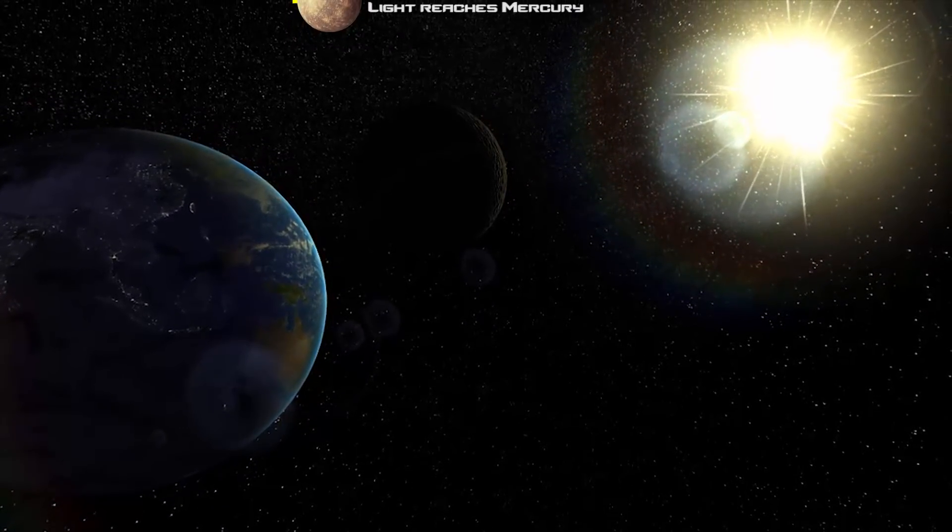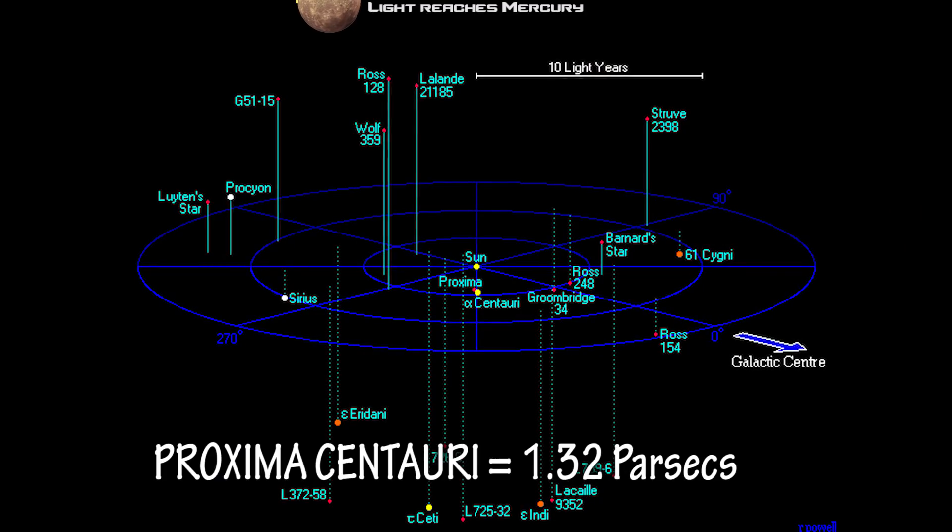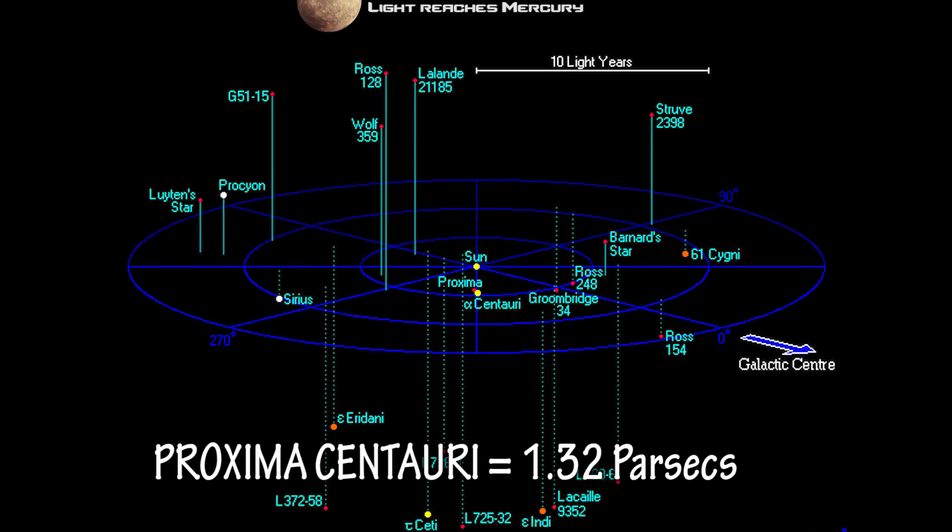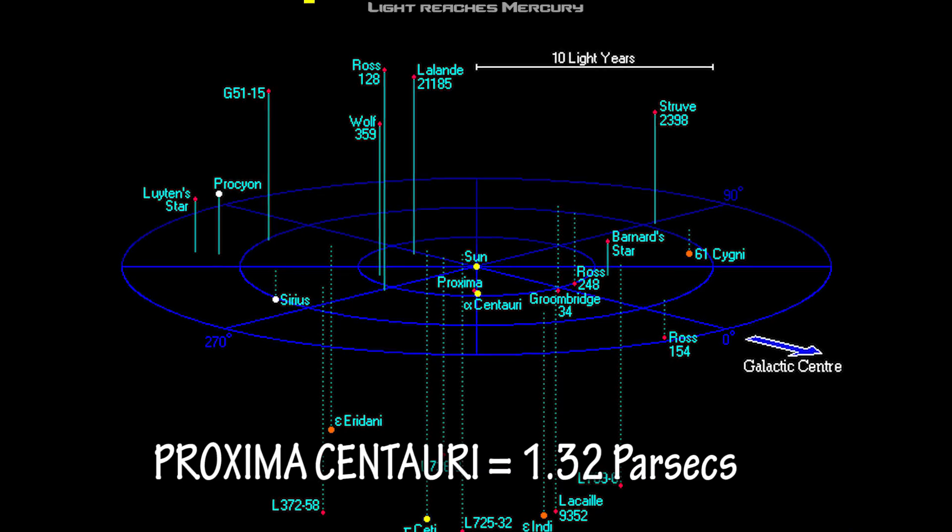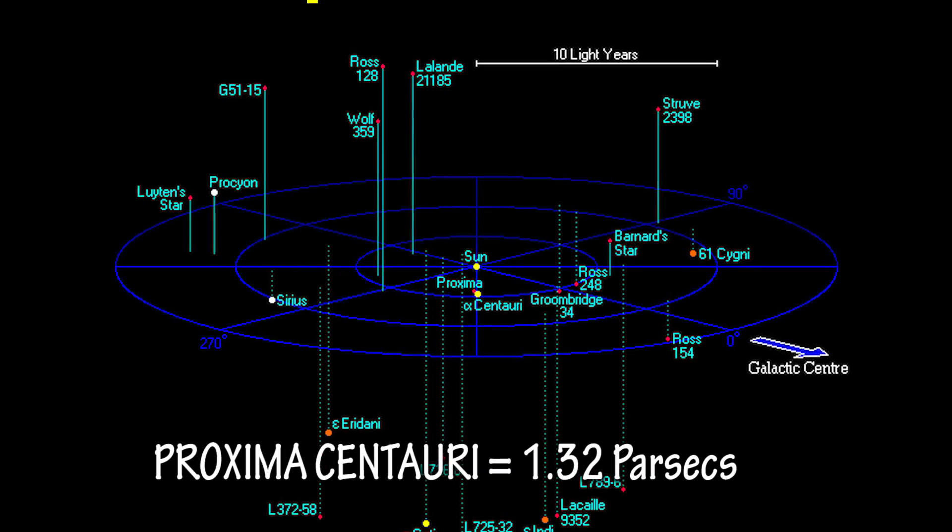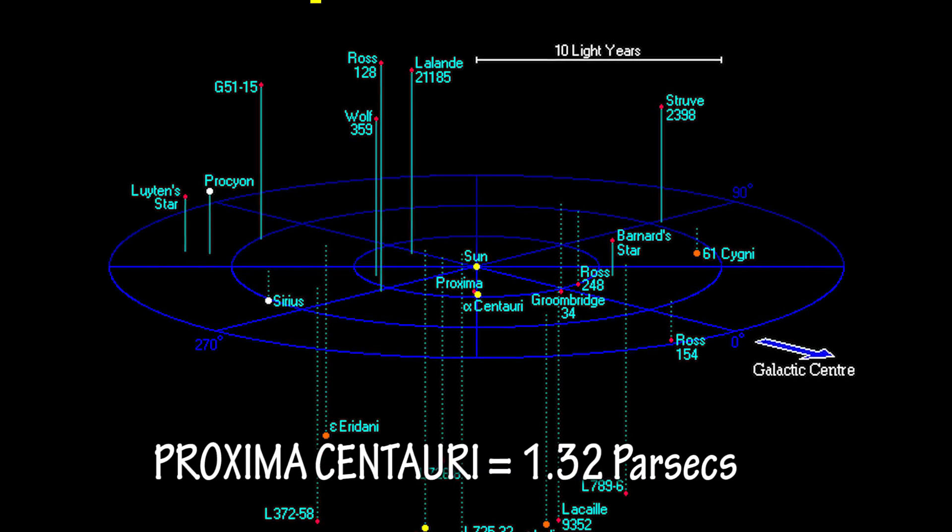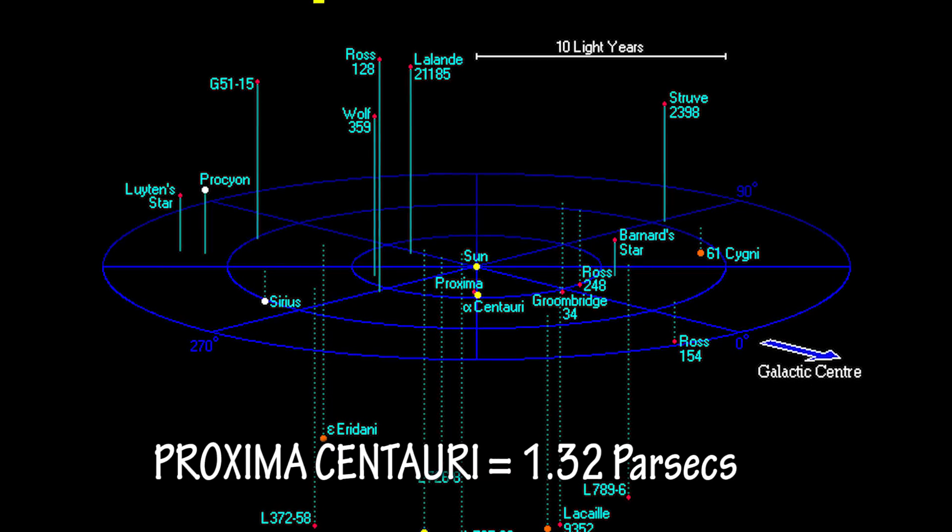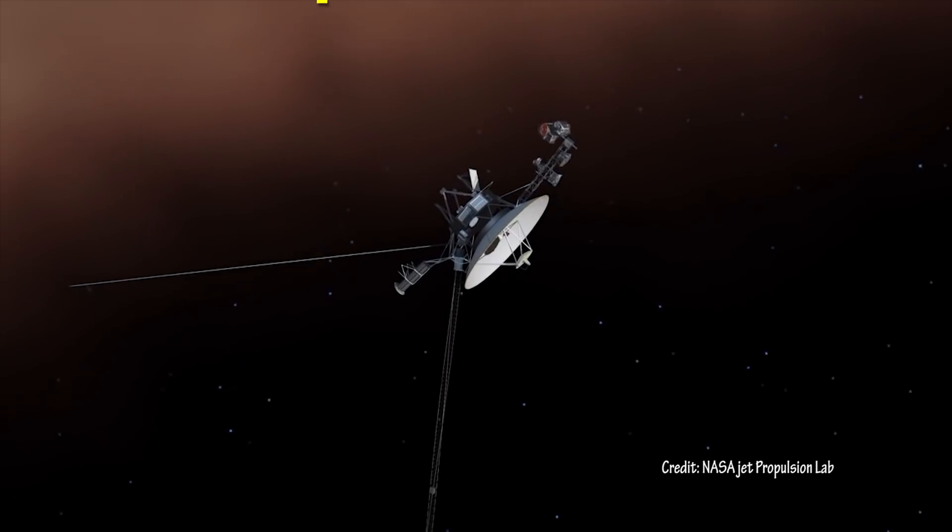Our nearest star, Alpha Centauri C, aka Proxima Centauri, is about 4.3 light years away. Meaning it takes 4.3 light years for us to find out if that star has exploded, compared to our own sun at 8 minutes.